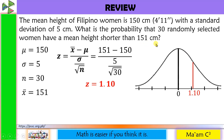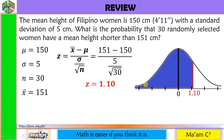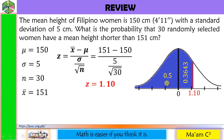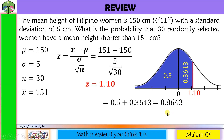We need the probability shorter than 151 centimeters, meaning shorter than 1.10, so we go to the left. We know that half of a normal curve is 0.5. Using the z-table, we find 1.1 on the first column and 0 on the hundredths digit. The intersection gives us 0.3643, which is the area from the mean up to 1.10. Since we need the totality of the shaded region, we add 0.5 and 0.3643.